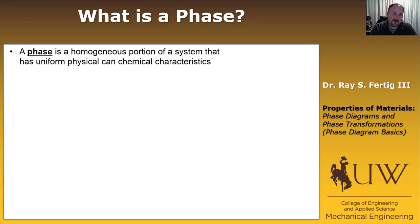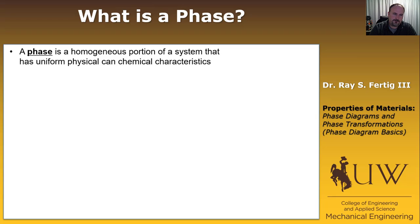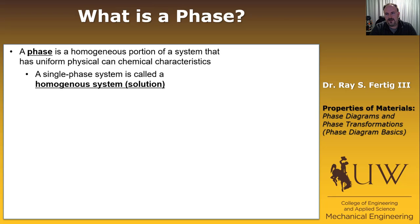The first question about phase diagrams that we want to answer is: what is a phase? A phase is a homogeneous portion of a system that has uniform physical and chemical characteristics. In the case of a single-phase system, we call it a homogeneous system, or sometimes we'll call it a solution.